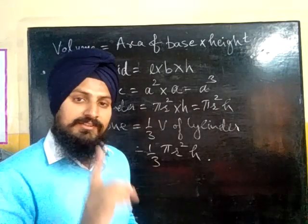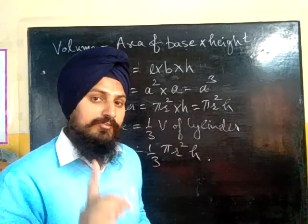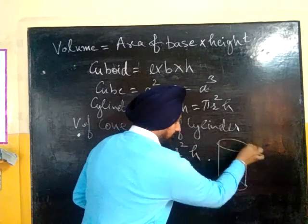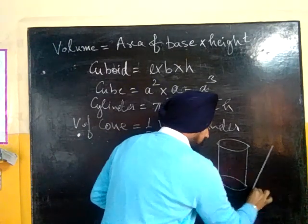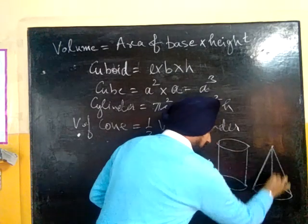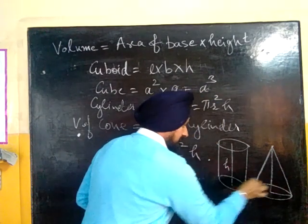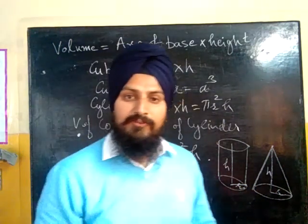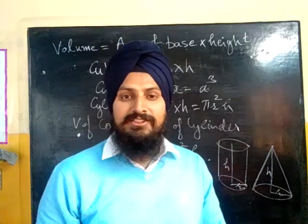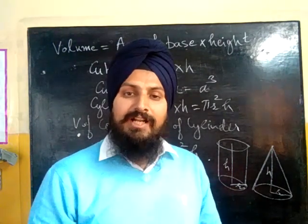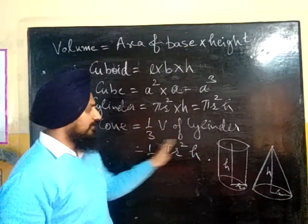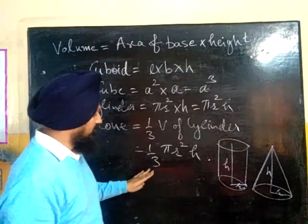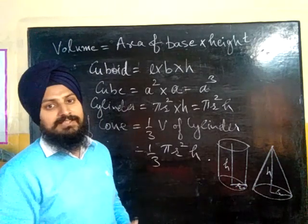But in what condition? When the cone and cylinder are of the same radius and same height. I want to show you a picture. Suppose this is the cylinder and I am having a cone which is of the same radius and same height. This is h, this is h, this is r, and this one is also r. If the cylinder and cone are of the same radius and same height, in that condition we can say the volume of cone equals one third the volume of cylinder, which is one-third pi r squared h.